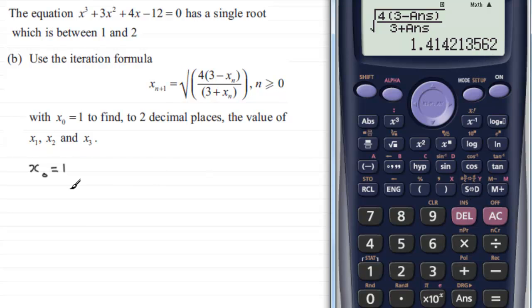So that's our first approximation x_1. x_1 then equals 1.414142... and if we round this now to two decimal places, that's going to equal 1.41 to 2 d.p.